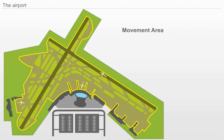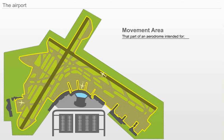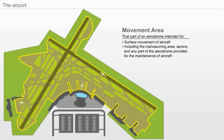Movement Area. That part of an aerodrome intended for the surface movement of aircraft, including the maneuvering area, aprons, and any part of the aerodrome provided for the maintenance of aircraft.